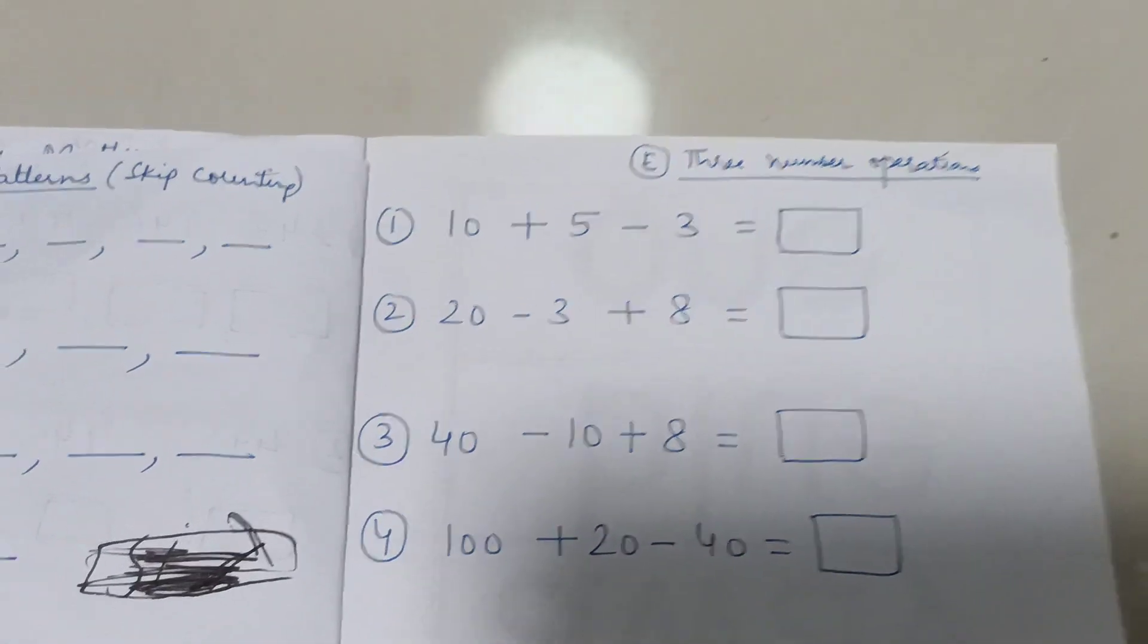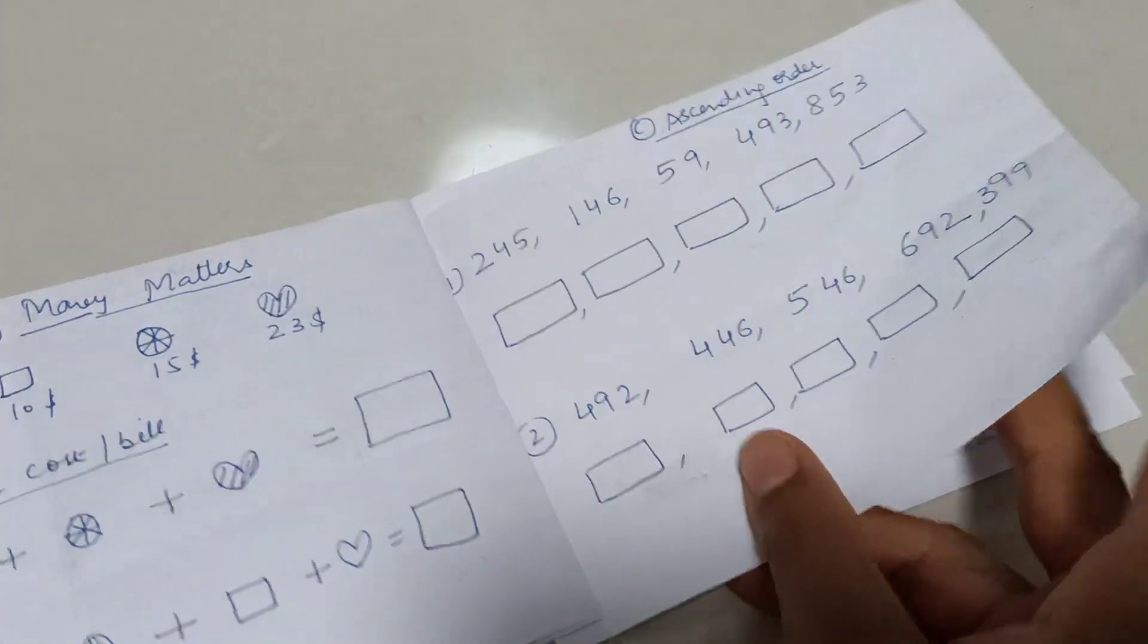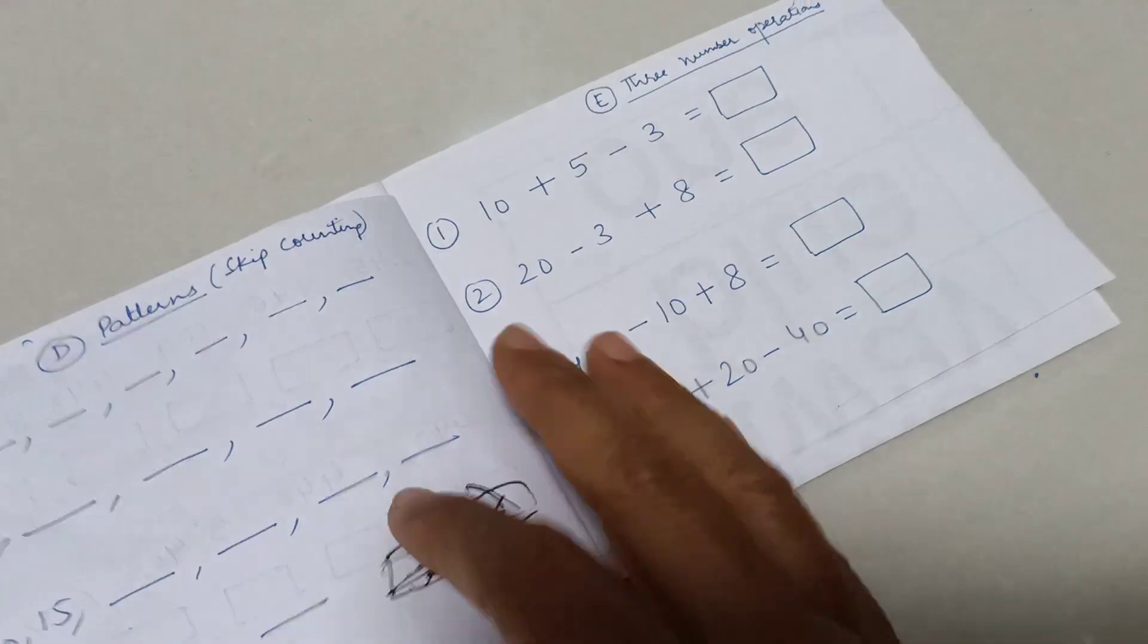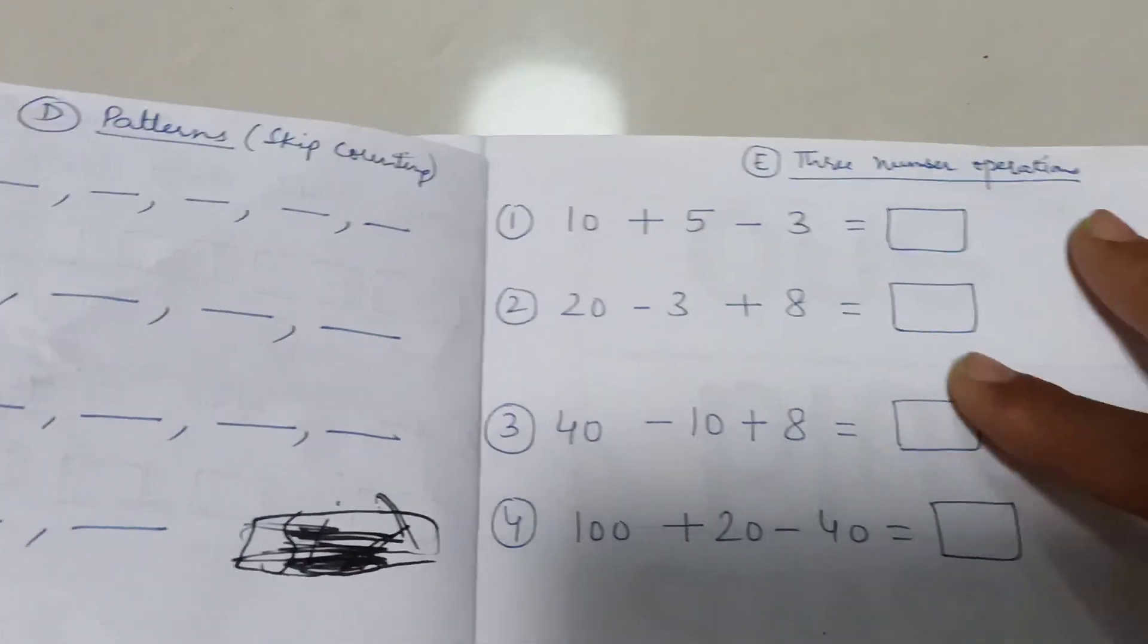In my busy book I do one difficult, one easy, one difficult, one easy activity. This was difficult, so this was easy. And now this is easy, so this is difficult. I maintain a balance in my busy book, not all difficult questions.